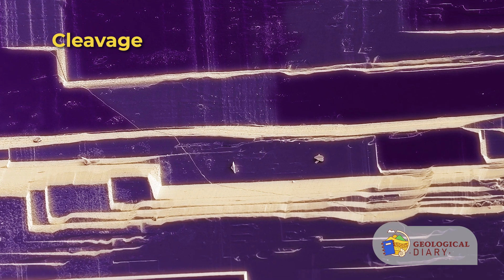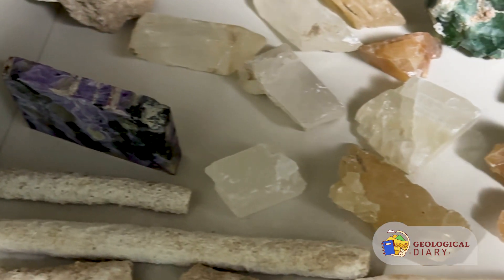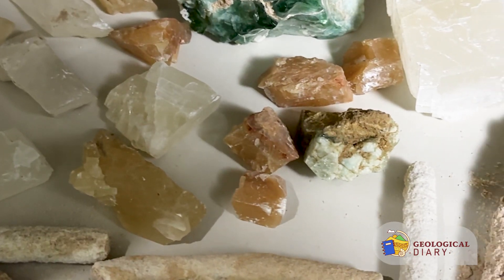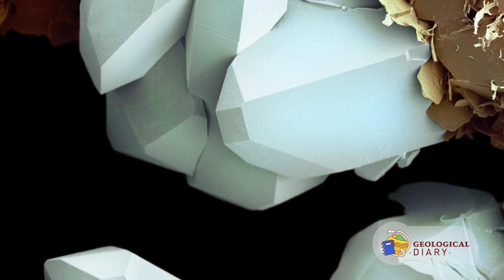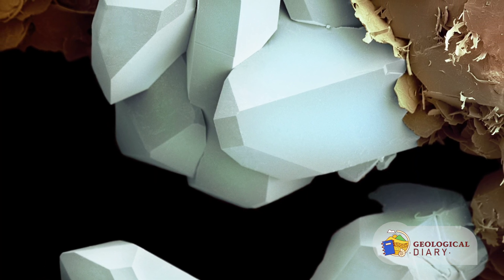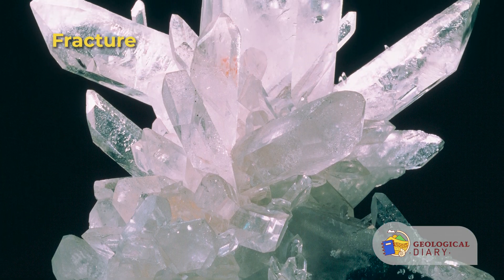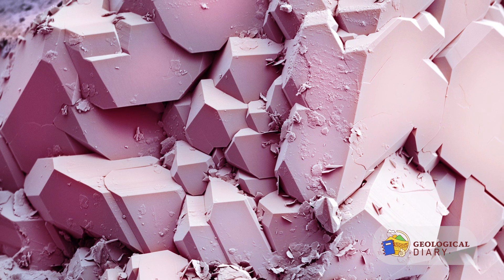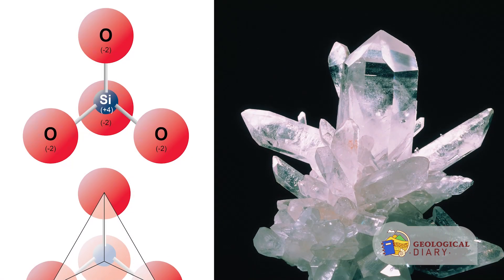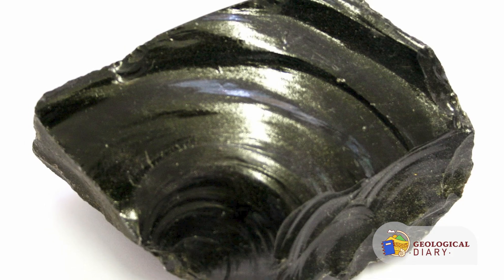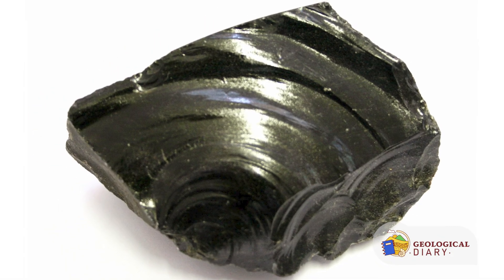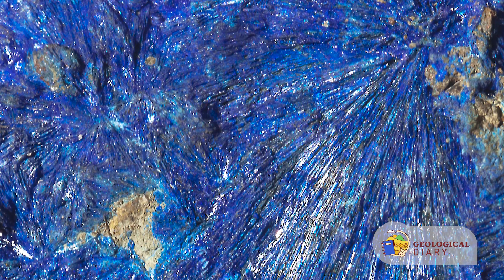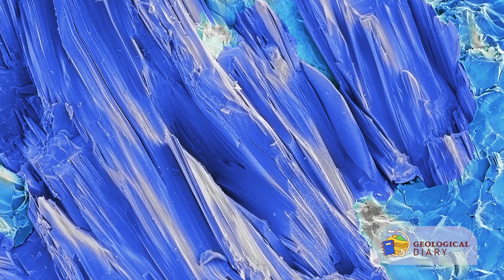Cleavage refers to how minerals tend to break when handled and stressed. This is largely dependent on the atomic-level structure of minerals, where some bonds are weaker than others — minerals tend to break along these planes of weak bonding, resulting in relatively smooth, flat surfaces. Fracture refers to how minerals break when they do not cleave; most produce uneven surfaces dependent on the internal atomic structure. A good example is quartz, which breaks into smooth curved surfaces called conchoidal fractures. Splintery and fibrous fractures are also commonly found in some minerals.